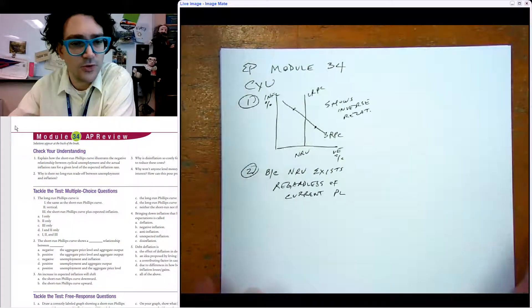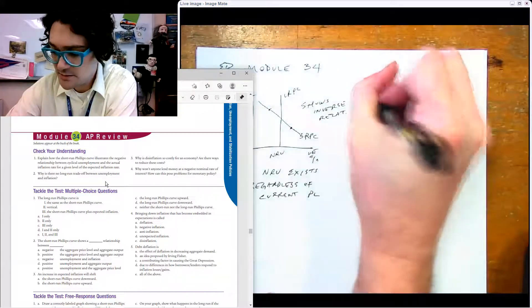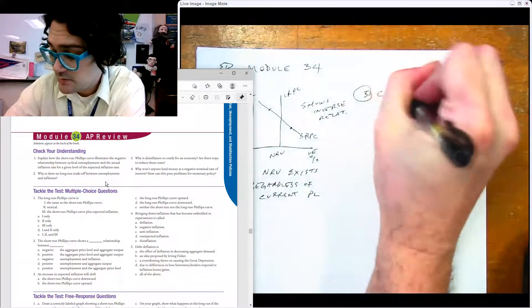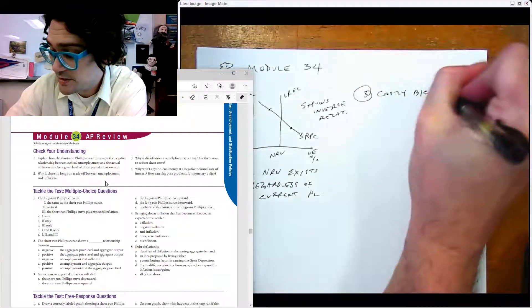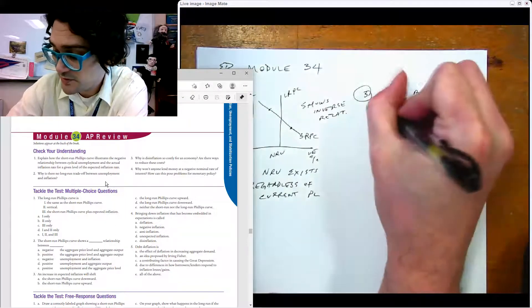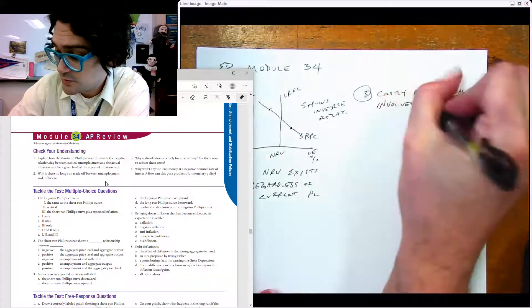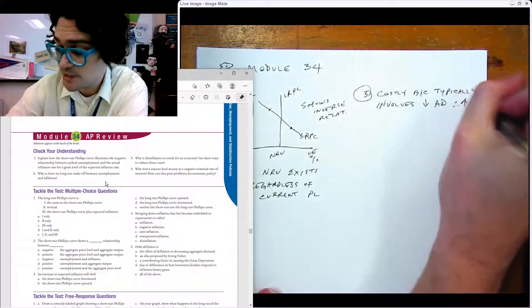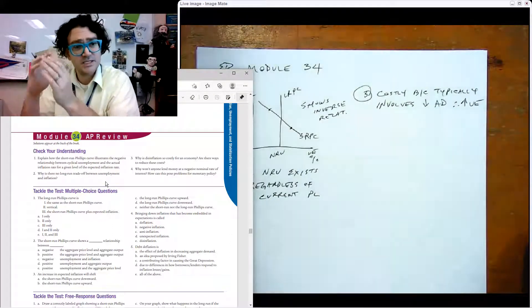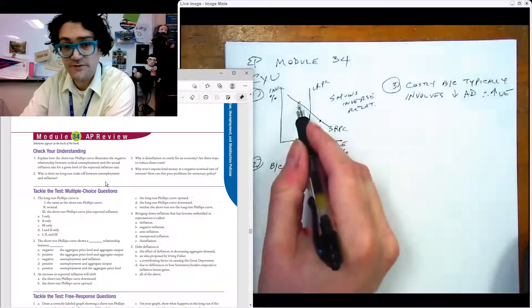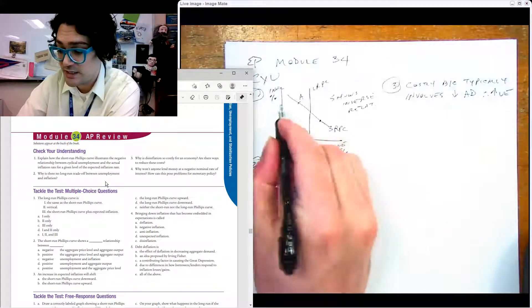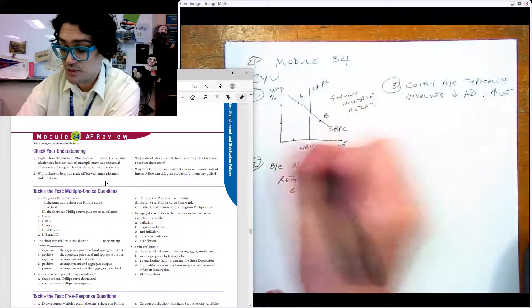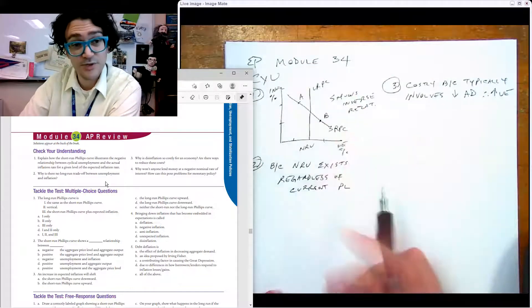Number three says why is disinflation so costly for an economy? It's costly because it involves reducing aggregate demand, and that therefore drives up unemployment. Usually the process of pushing down the inflation rate causes you to go from a very high inflation rate with low unemployment to point B, which is much lower inflation but much higher unemployment.